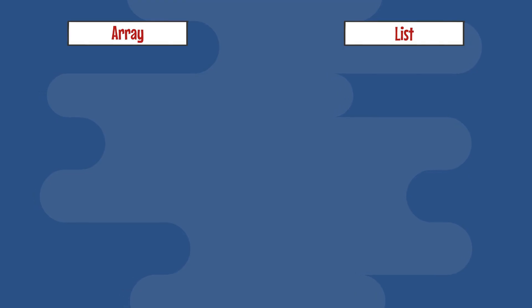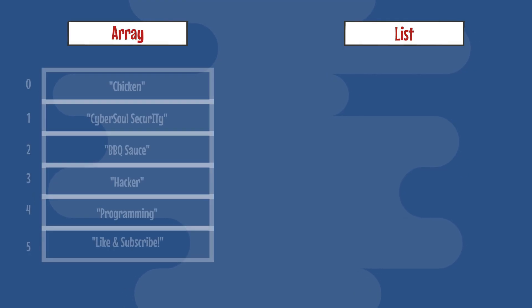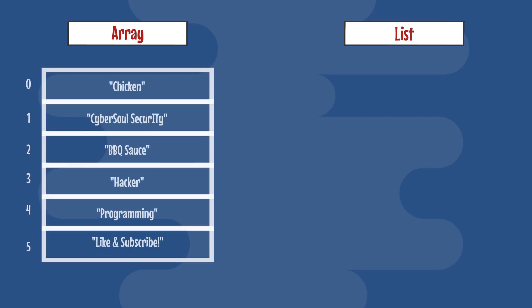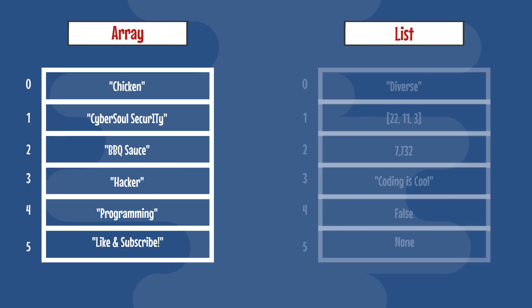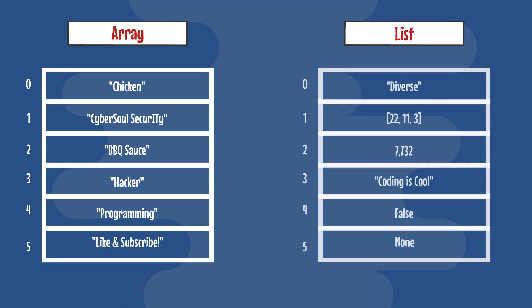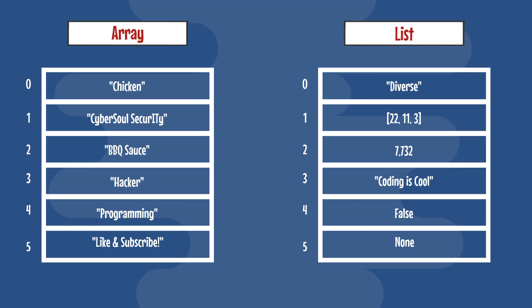Lists and arrays are similar; however, arrays can only hold elements of the same data type, such as all floating point numbers or all strings. In contrast, lists can contain elements of different data types, like integers, strings, and booleans.